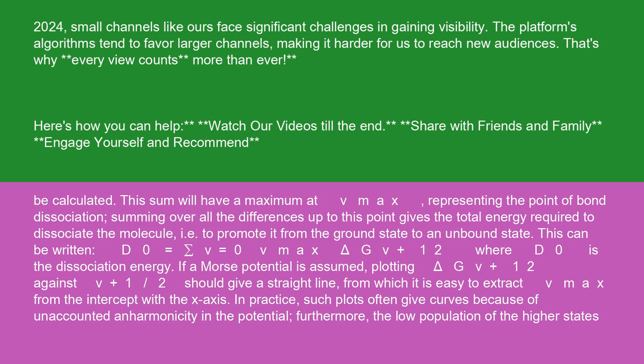If a Morse potential is assumed, plotting ΔG(v+1/2) against v+1/2 should give a straight line, from which it is easy to extract v_max from the intercept with the x-axis.